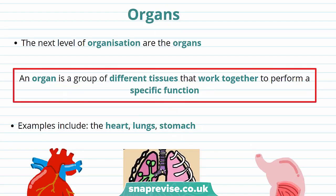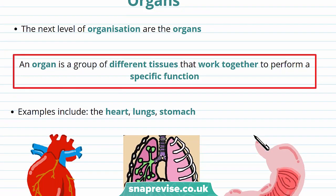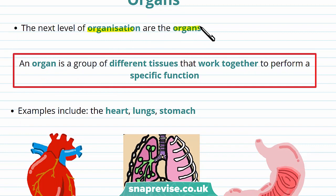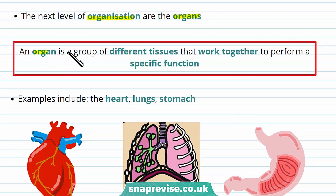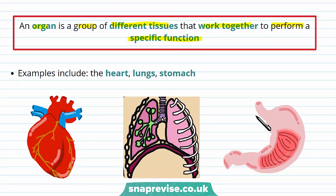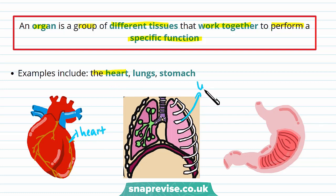So now we know about tissues, let's talk about organs. The next level of organisation are the organs. The definition of an organ is a group of different tissues that work together to perform a specific function. Examples include the heart, the lungs, and the stomach. The stomach is made out of muscular tissue, glandular tissue, and epithelial tissue. These all work together to churn and digest food.